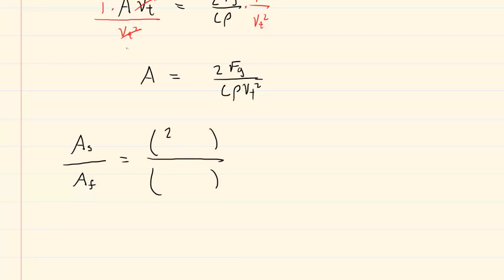For the slower area, you would have 2fg divided by c rho and then the slower velocity squared. It's actually a terminal velocity, but we're just going to use a subscript s to show that it's for the slower velocity. And then for the faster speed, we would have 2fg divided by c rho and then the faster terminal speed squared.